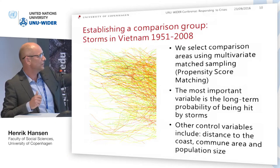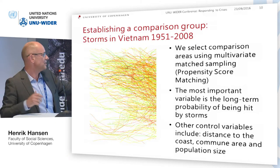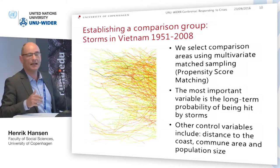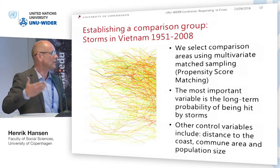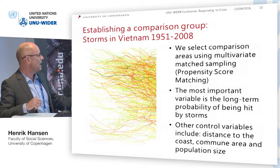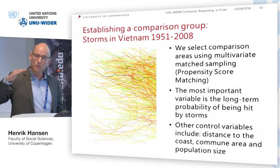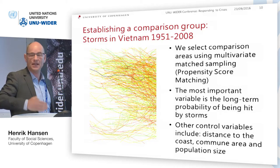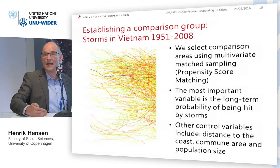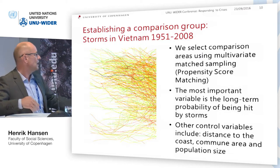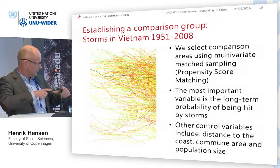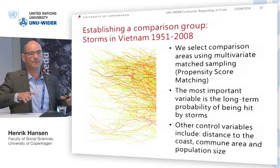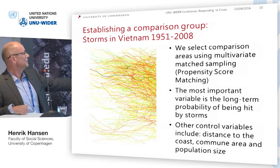We use propensity score matching and multivariate matched sampling to select the comparison group. The key variable is the hazard probability — the propensity of actually being affected by a storm. We also include distance to the coast, because wind speed attenuates inland and mudslide probabilities change, as well as commune area and population size.